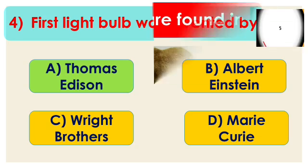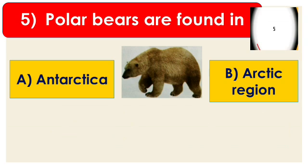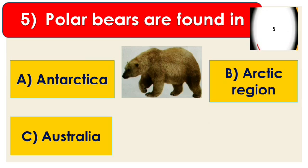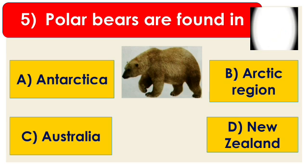Question number 5: polar bears are found in A. Antarctica, B. Arctic region, C. Australia, and D. New Zealand. The right answer is B, Arctic region. Polar bears are mostly found in the Arctic region.